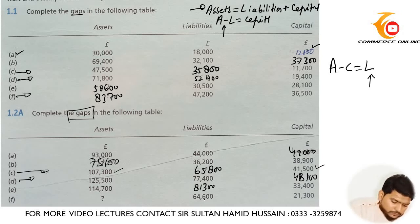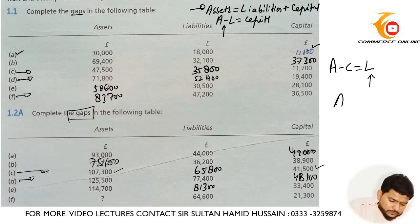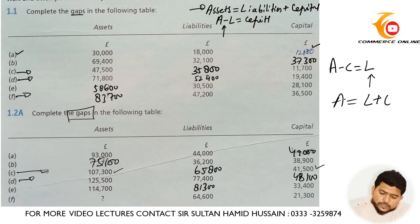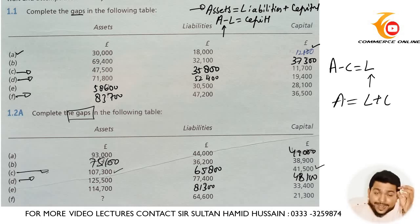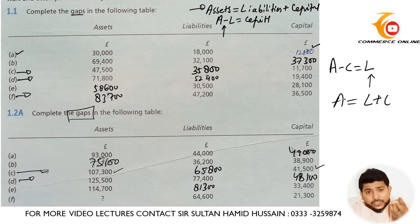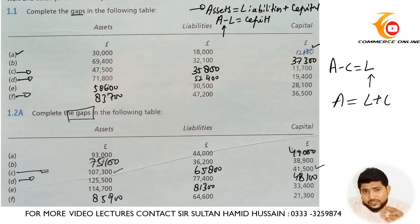In the last part, liabilities are given as 64,600 and capital is 21,300. You need to find out assets, so you add liabilities plus capital: 64,600 plus 21,300 gives you assets of 85,900.